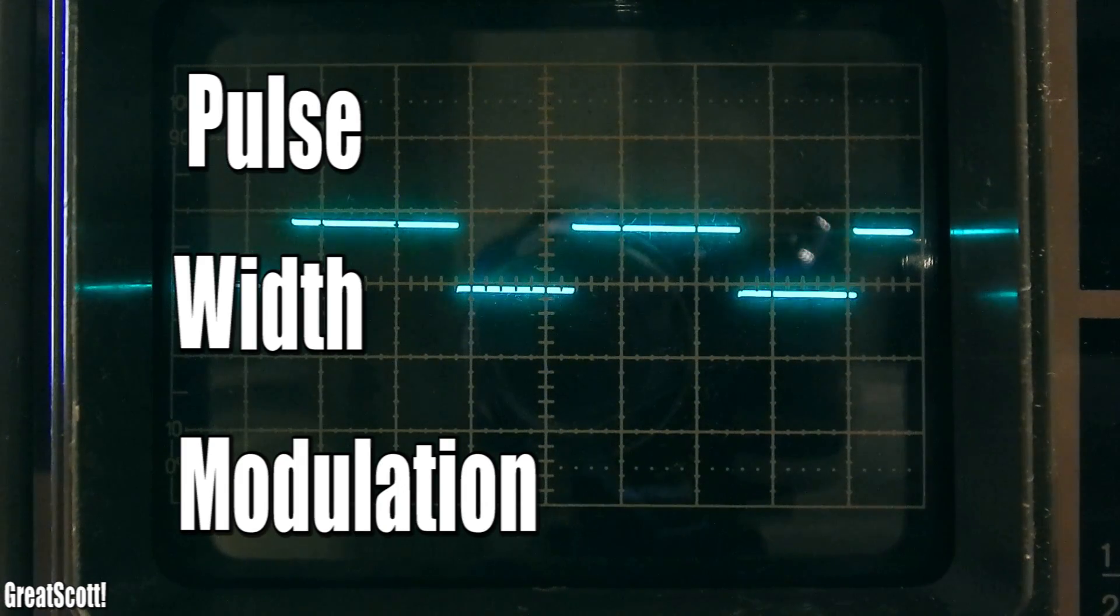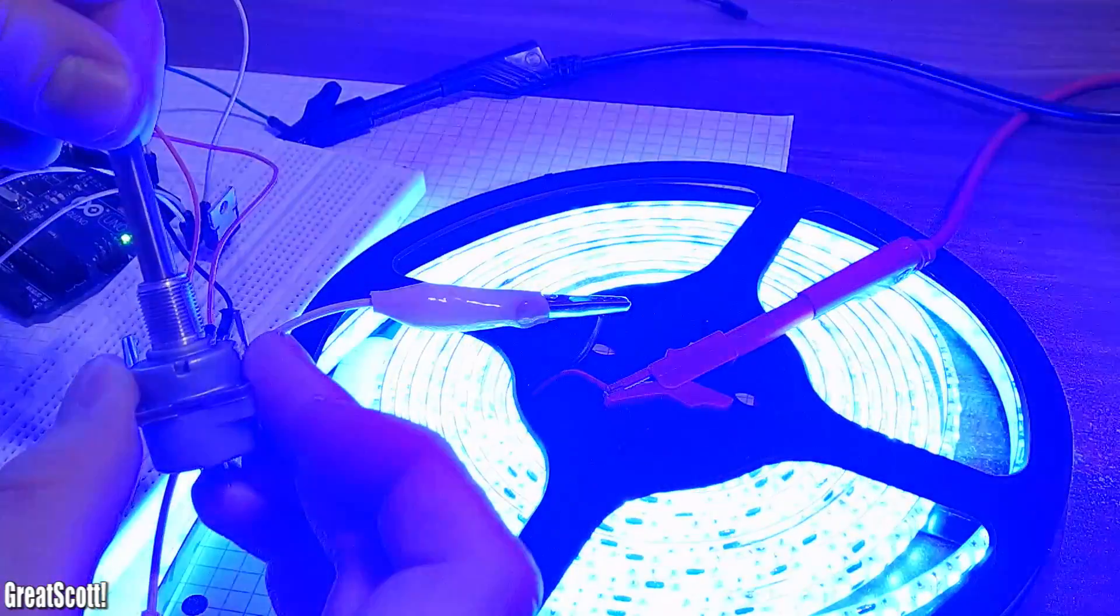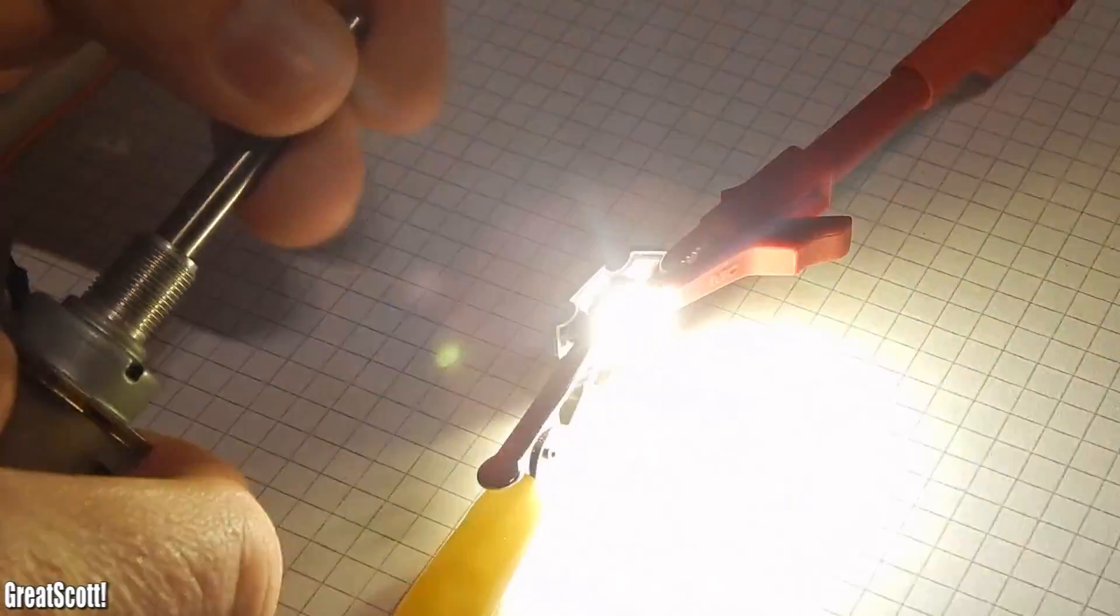You will be able to dim all kinds of LEDs like normal 5 millimeter LEDs, LED strips, high-power LEDs and many more.